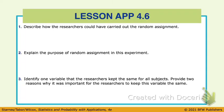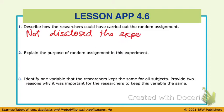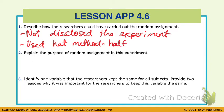Researchers could have carried out the random assignment in either of those two ways — not disclosing the experiment. What would that be called if they know what's going on, but the subjects don't really know what's going on? Single-blinded. Or they could have used the hat method where half get one treatment and half get the other.